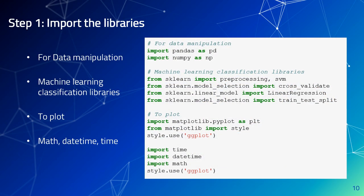In step 1, we import the libraries. For data manipulation, we import the Pandas and NumPy libraries. For machine learning classification, we import Sklearn preprocessing, linear regression, and train-test split. We also import Matplotlib to plot the predicted stock prices in step 7, and use it to generate random numbers when creating the label column. We also use the datetime and time libraries.